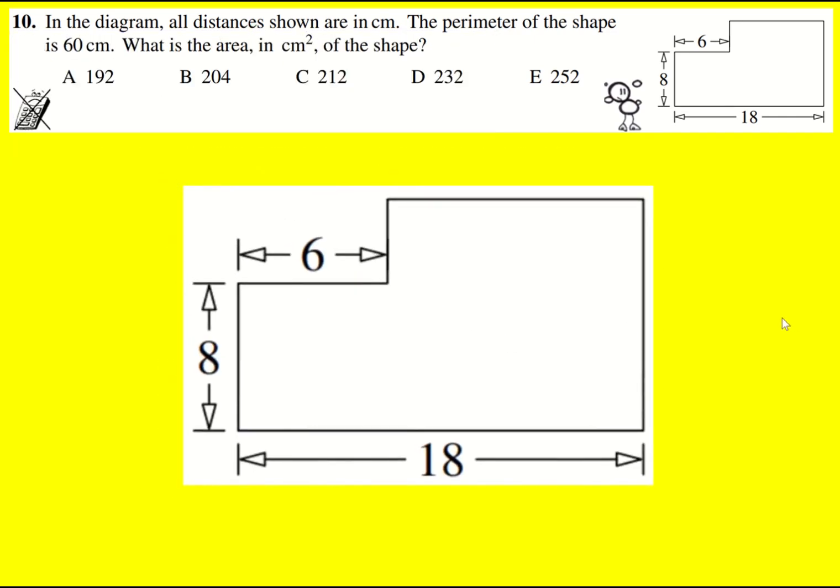We're told that the perimeter of this shape is 60 and we're asked for the area. Now the first thing to see is because this is 18 and this is 6, that length there must be 18 minus 6, because I'm just going part of the way, it's going to be 12. That may or may not be useful but it just kind of jumps out.